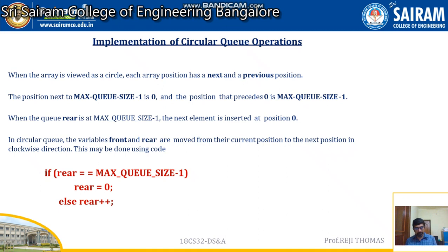Think that you have a queue with size eight, so its index values start from zero to seven. To insert the next element, seven plus one is going to be eight — but there is no location called eight. So when I increment seven plus one, it should go to zero. Normally we do this: if rear equals Q size minus one, we are going to make rear equal to zero; otherwise, rear plus plus. So the moment you find that rear equals Q size minus one, you are going to reach zero.